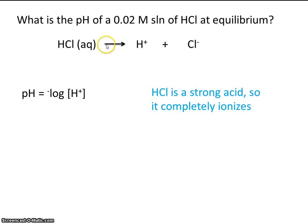Okay, if we start with a 0.02 molar solution, and all of it splits up, that means at equilibrium, we don't have any of this. And we have 0.02 molar of hydrogen ion and 0.02 molar of chloride ion.